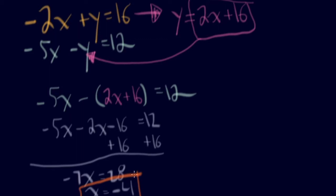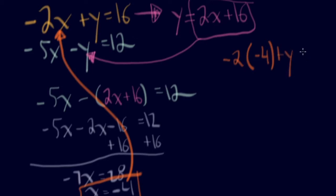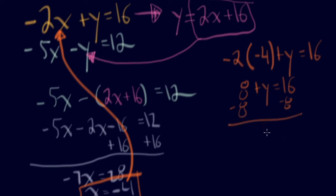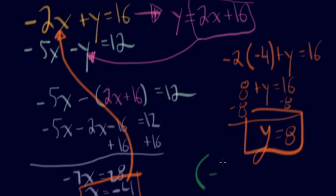Distributing the negative sign gives a new equation. Combining like terms and adding 16 to both sides, I get negative 7x equals 28, so x equals negative 4. Now substitute that negative 4 back in: negative 2 times negative 4 plus y equals 16, giving positive 8 plus y equals 16. Subtract 8 from both sides and y equals 8. The final answer is negative 4 comma 8 — that's where the two lines cross.